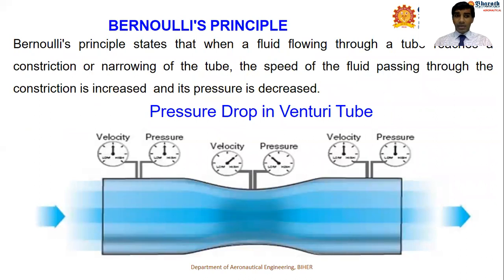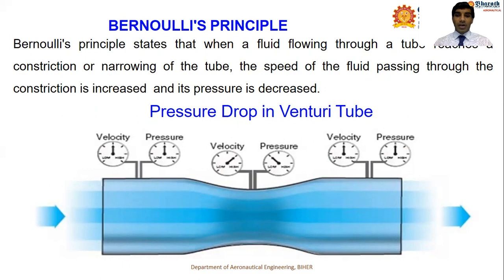Bernoulli's Principle is the most important principle, upon which all fluids work. It states that when a fluid flowing through a tube reaches a constriction or narrowing of the tube, the speed of the fluid passing through the constriction is increased and its pressure is decreased. At the inlet where area is more, there is no change in velocity and pressure. At the throat (middle) where area reduces, velocity increases and pressure decreases. At the outlet, velocity and pressure return to normal.